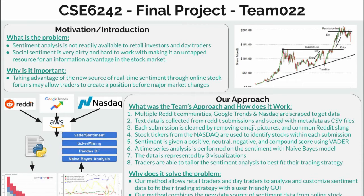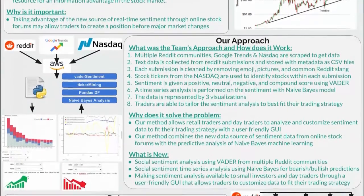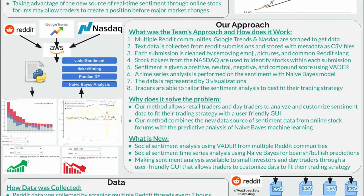However, sentiment data is very dirty and hard to work with. The project's goal is to create a sentiment indicator that can be added to an investor's strategy. On the left we see the system's pipeline: first, sentiment data is collected from multiple Reddit threads, Google Trend data, and Nasdaq data, and is stored in an AWS S3 bucket. Once collected, the text data is analyzed and given sentiment scores using VADER, and mined for stock tickers.